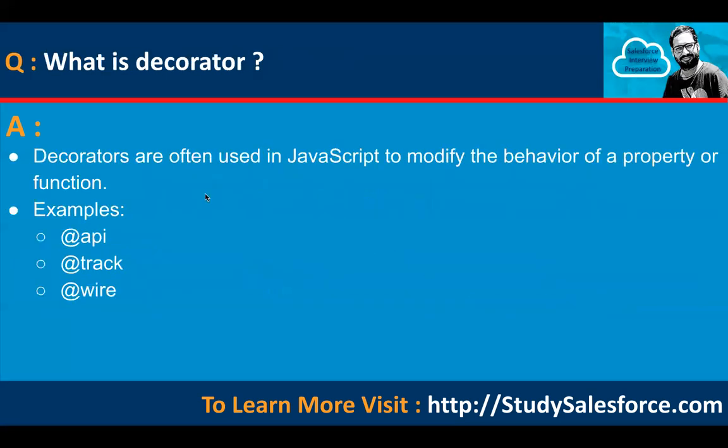What is a decorator? Decorators are often used in JavaScript to modify the behavior of a property or function. We can use three decorators: @api, @track, and @wire. @track was used in early days of Lightning Web Component to declare a property as private, but right now you can declare a property without it. @api is for public properties, and @wire is used to call predefined functionality or an Apex class method.